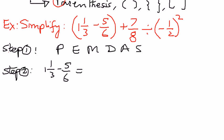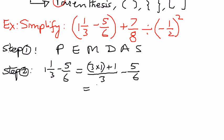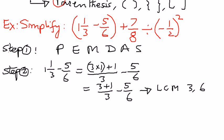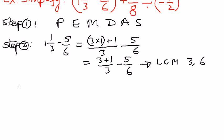We have a mixed number 1 and 1/3. We simplify that as: 3 times 1 (the denominator times the whole number), take that product, add 1 (the numerator), divided by 3, minus 5/6. This gives us 3 plus 1 over 3, minus 5/6. We want to find the least common multiple for 3 and 6. We know 6 is a multiple of 3 — 3 times 2 is 6, and 6 times 1 is 6.